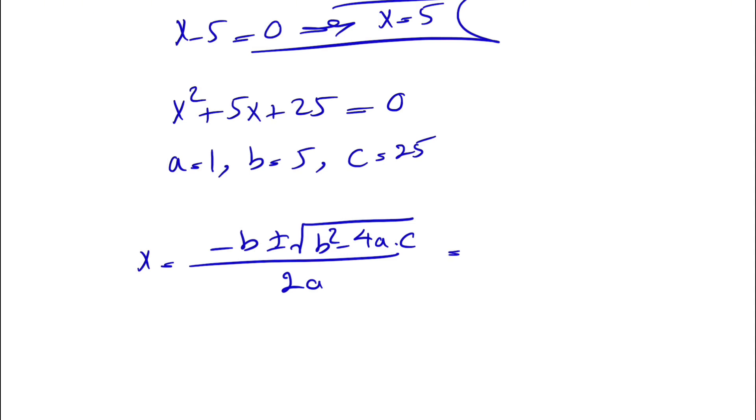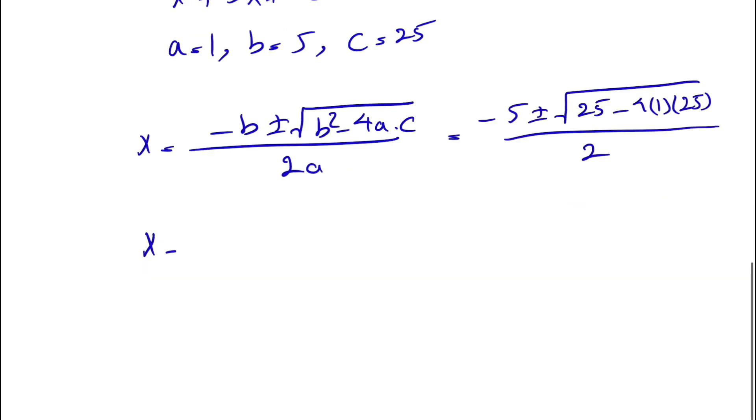So we have minus 5 plus or minus the square root of b squared, so 5 squared is 25, minus 4 times a is 1 and c is 25, divided by 2. So what we have for x is minus 5 plus or minus, we have 25 minus 100 because 4 times 25 is 100, so minus 75 over 2.